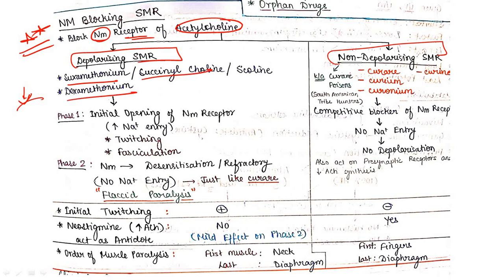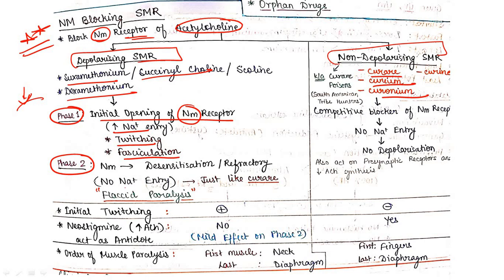Non-depolarizing SMR includes three groups: curare group, curium group, and curanium group. Depolarizing SMR works in two phases. In phase one, there is initial stimulation of the NM receptor, leading to sodium channel opening and increased sodium entry — causing twitching and fasciculations. In phase two, due to overstimulation, the receptor enters a desensitization or refractory phase, leading to flaccid paralysis.